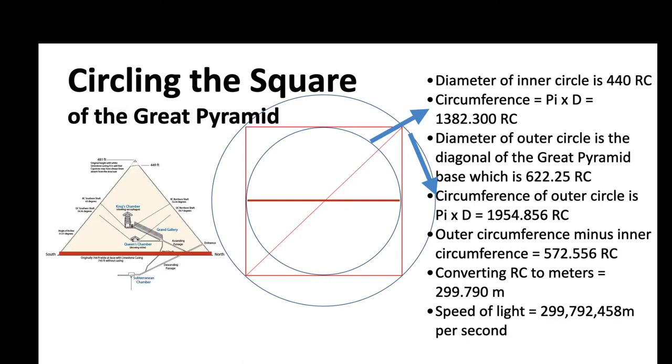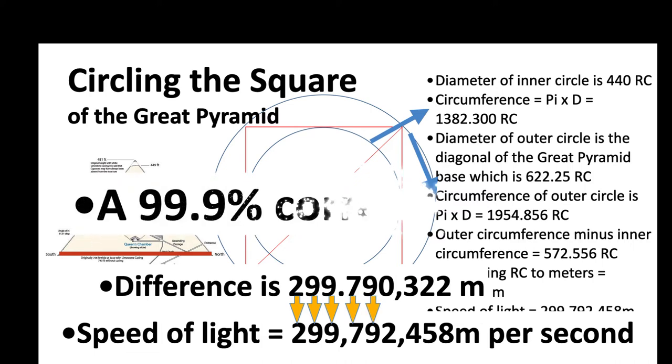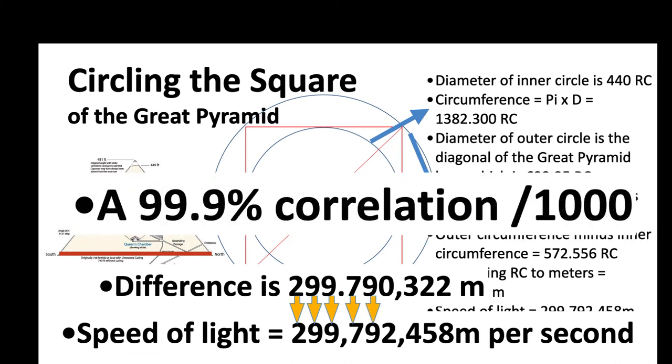Well, the speed of light is 299,792,000 meters per second. Look at the incredible similarity of numbers: the 2, 9, 9, 7, and 9. This is 99.9% correlation divided by 1,000.